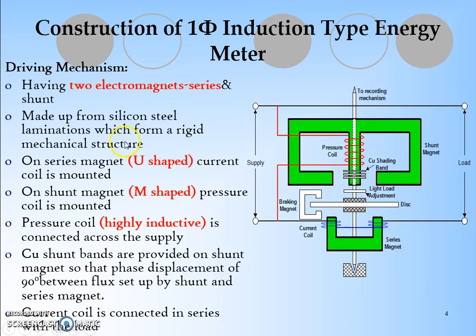It is made up of silicon steel laminations which form a rigid mechanism structure. On series magnet, U-shaped current coil is mounted and for shunt, M-type electromagnet is mounted. The pressure coil is highly inductive in nature. Copper shunt bands are provided on shunt magnet so that phase displacement of 90 degrees between flux set up by shunt and series magnet. The main approach is we have to create the phase difference.